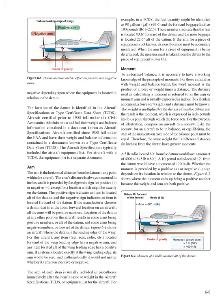Arm: The arm is the horizontal distance from the datum to any point within the aircraft. The arm's distance is always measured in inches and is preceded by a positive (+) or negative (−) algebraic sign. A positive sign indicates an item is located aft of the datum, and a negative sign indicates an item is located forward of the datum. If the manufacturer chooses a datum at the most forward location on an aircraft, all arms will be positive numbers.